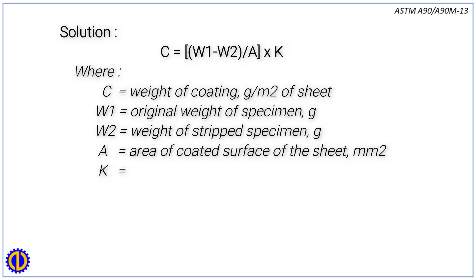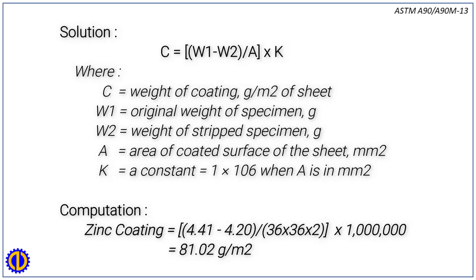Solution for zinc-coated sheets: C = [(W1-W2)/A] × K, where C = weight of coating in g/m² of sheet, W1 = original weight of specimen in grams, W2 = weight of stripped specimen in grams, A = area of one surface of the sheet in mm² if only one side coated, and K = a constant = 1 × 10⁶ when A is in mm².